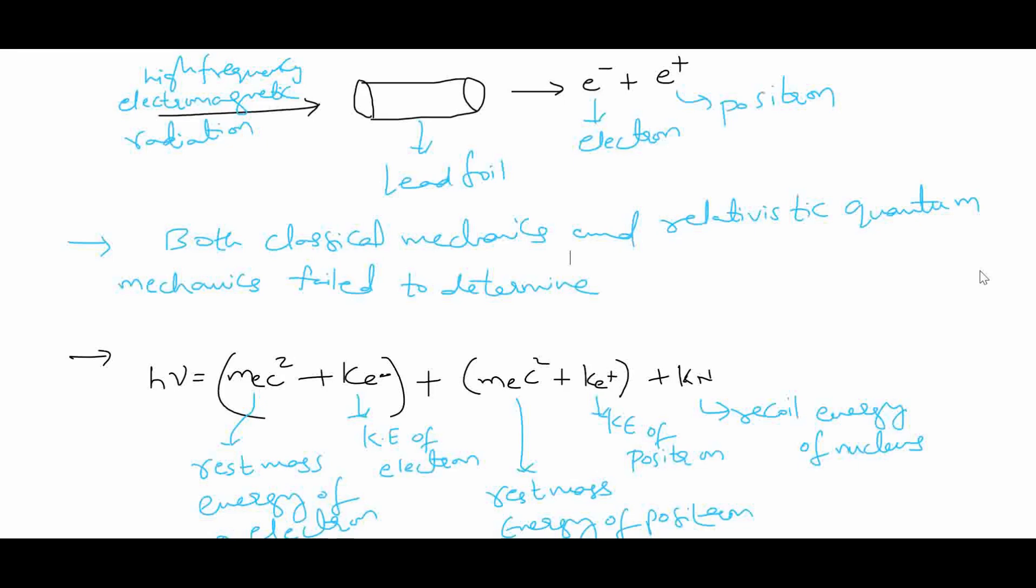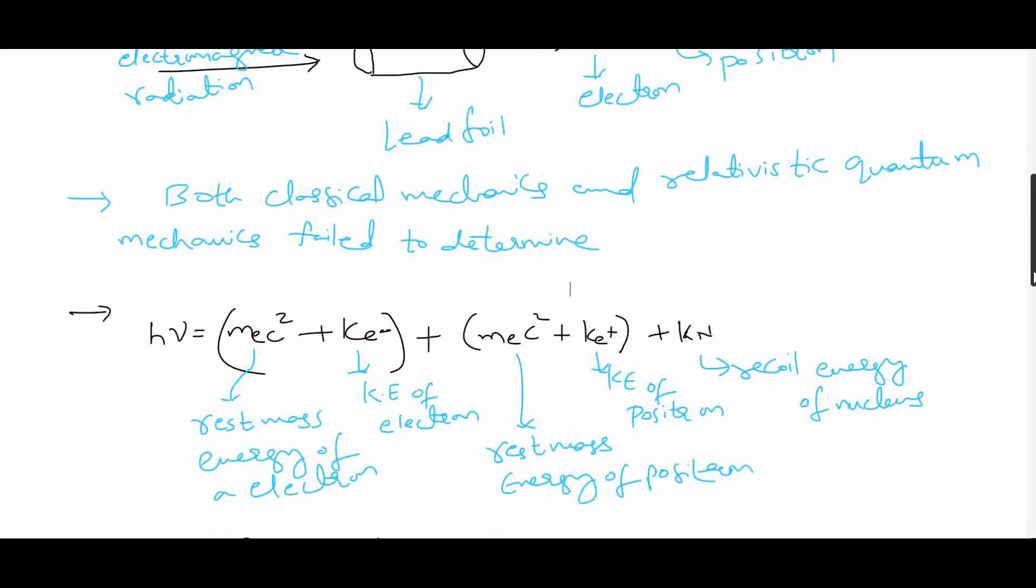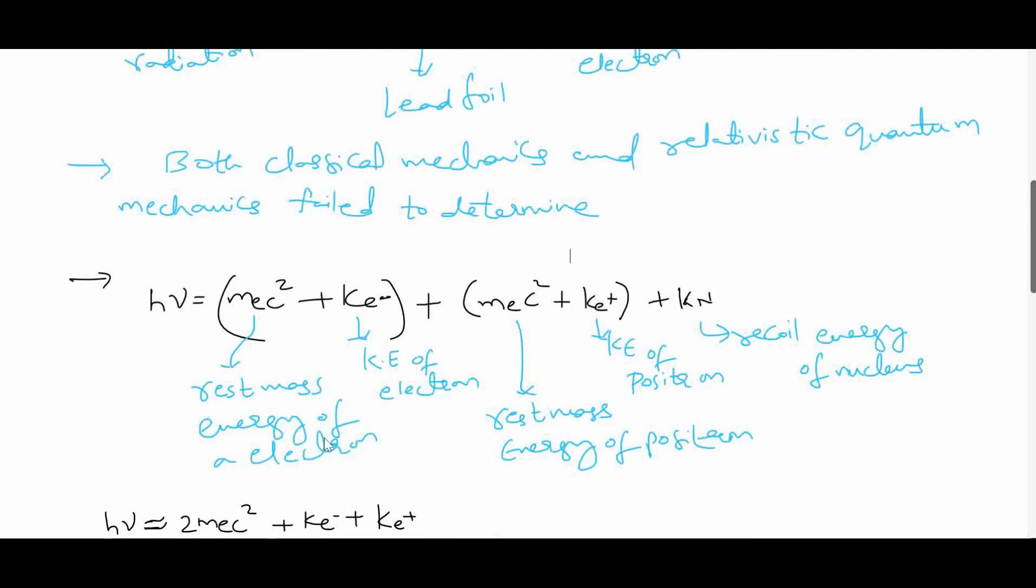The photon has energy h nu. When it gives rise to electron and positron, we will have these set of energies: rest mass energy of electron and the kinetic energy of electron, rest mass energy of positron and kinetic energy of positron, plus recoil energy of nucleus.